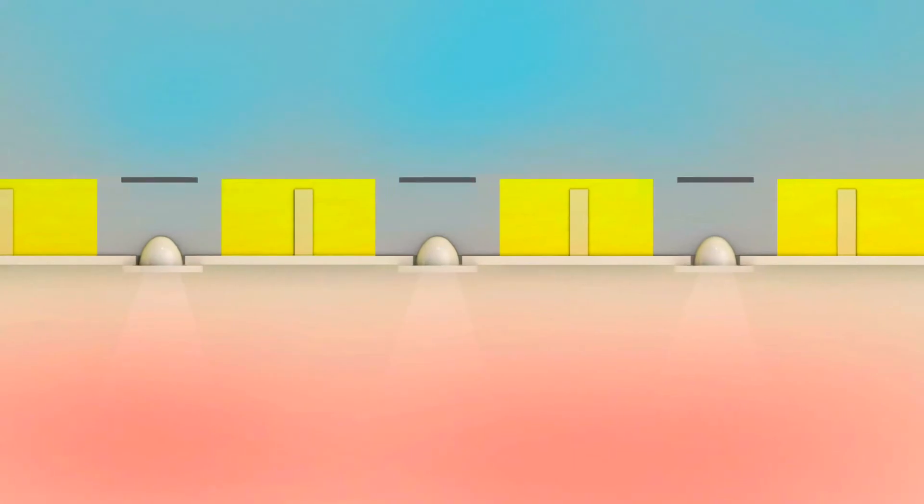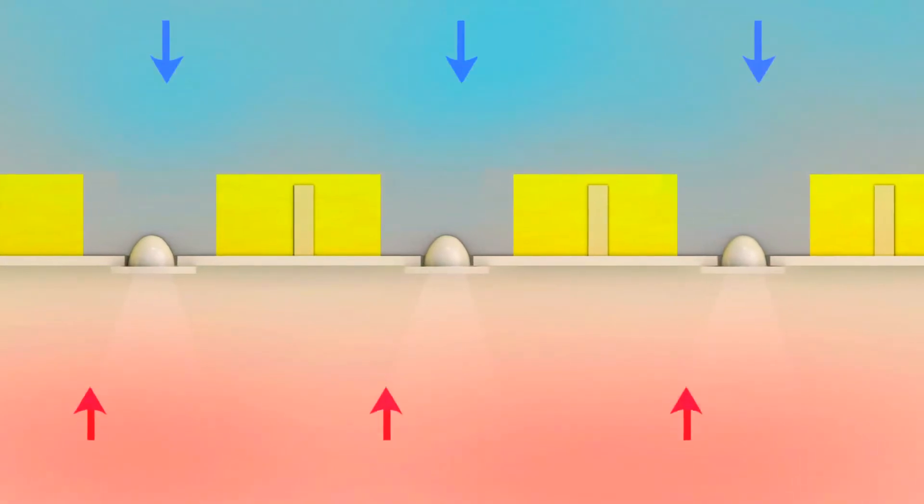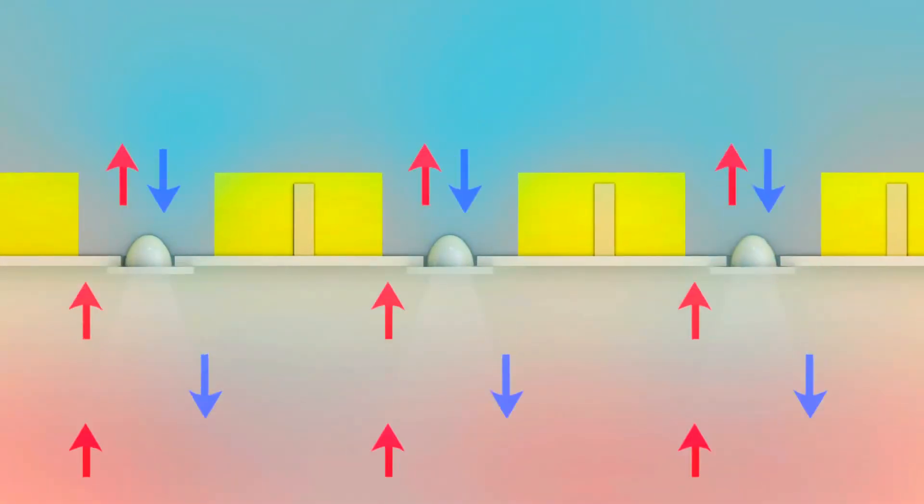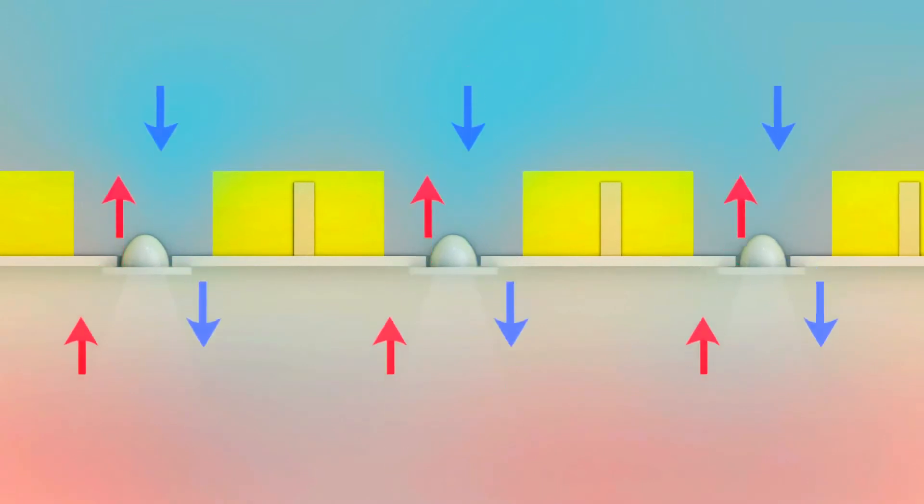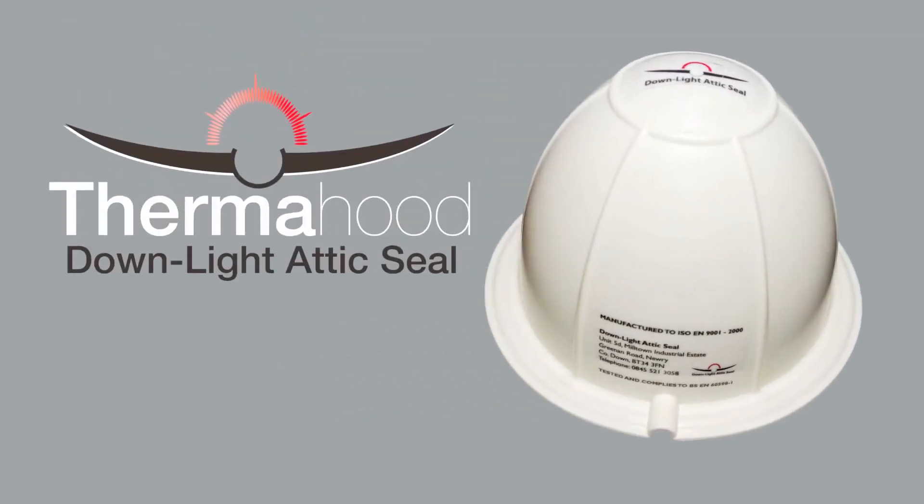As you need to leave a gap in your insulation above each downlight to prevent ceiling fire, the effectiveness of the loft insulation is reduced by up to 30%. Stop this heat and energy loss with the Thermahood downlight attic seal.